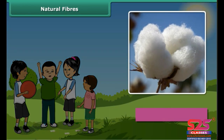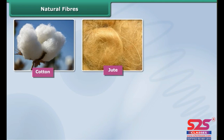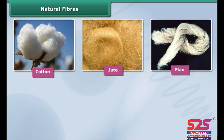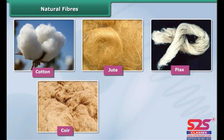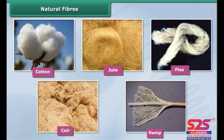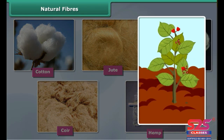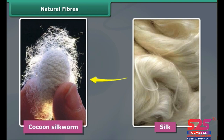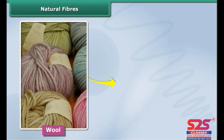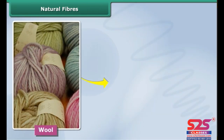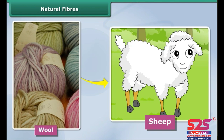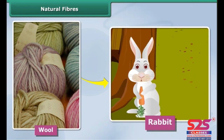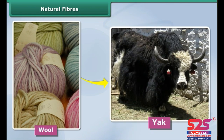Fibers can be both natural or artificial. You feel comfortable when you wear cotton clothes in summer — cotton is a natural fiber. Natural fibers like cotton, jute, flax, coir, and hemp are obtained from plants. Silk fiber is drawn from the cocoon of a silkworm. Wool is obtained from the hair of animals like sheep, goat, rabbit, yak, and camel.